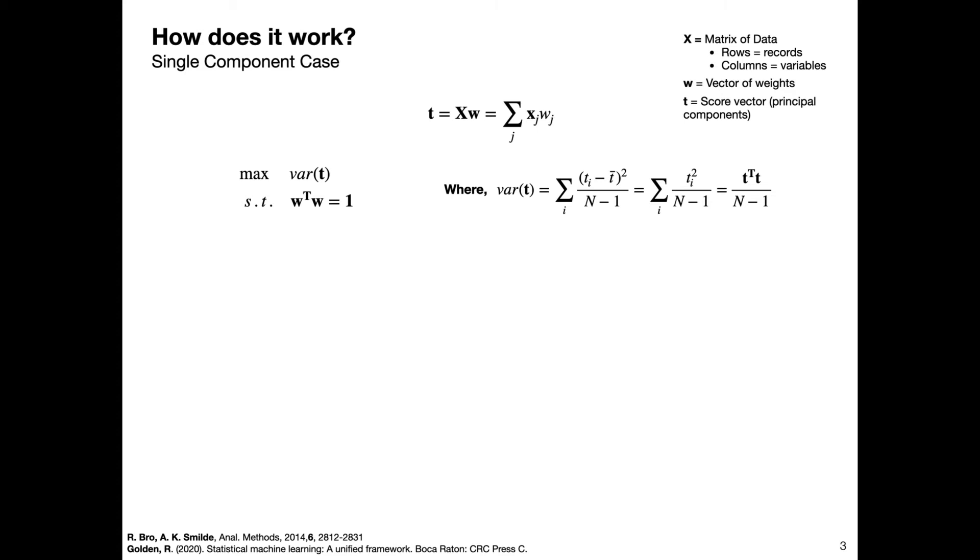What does that mean? We can rewrite this optimization problem: instead of maximizing the variance, we can just maximize the norm squared of t, because the vector w that maximizes the norm squared of t is also going to be the same vector w that maximizes the variance of t.